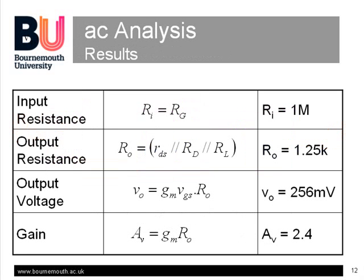This slide summarizes the results. The input resistance is simply the 1 mega ohm gate resistor. The output resistance is the parallel combination of the JFET drain and load resistors, which is 1.25 K. The output voltage arises from the drain current passing through the output resistance, where the drain current ID is given by the transconductance multiplied by the gate voltage provided by the input signal VI. And the voltage gain, AV, is the ratio of VO to VI, or simply GM multiplied by the output resistance.